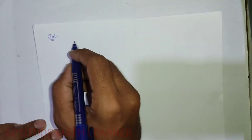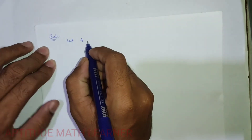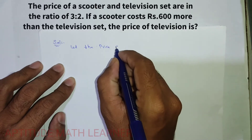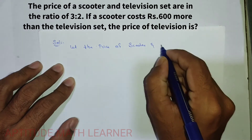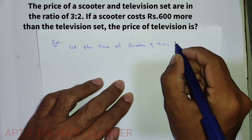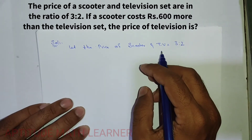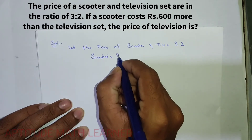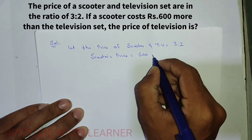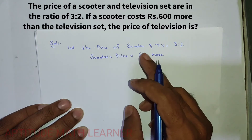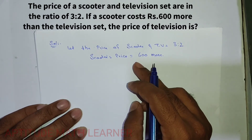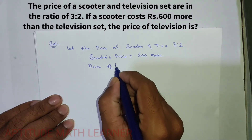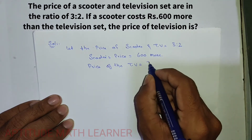Let the price of the scooter and television be in the ratio 3:2. The scooter's price is rupees 600 more — that is the given information, as you can see in the question above. We have to find the price of the television.